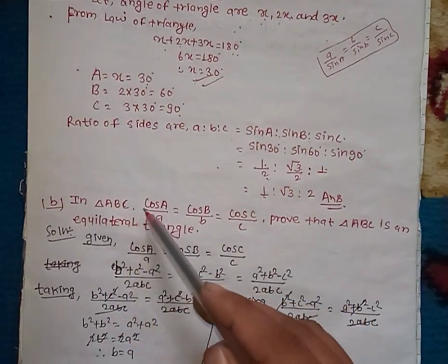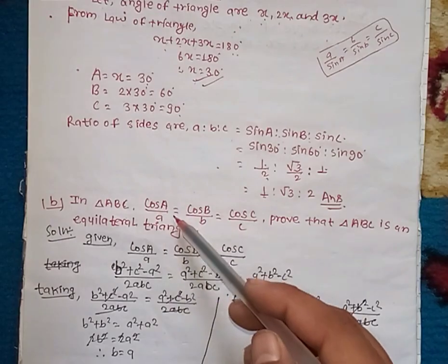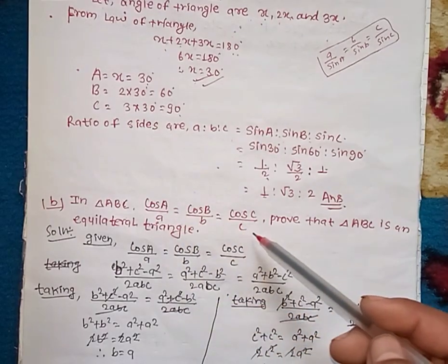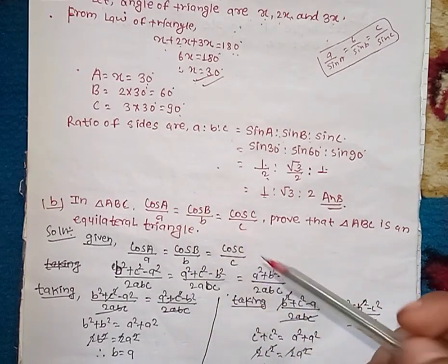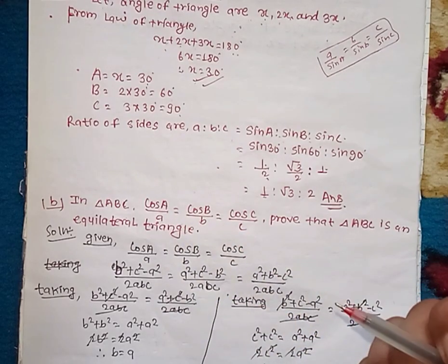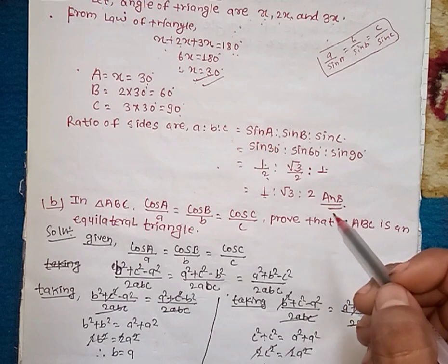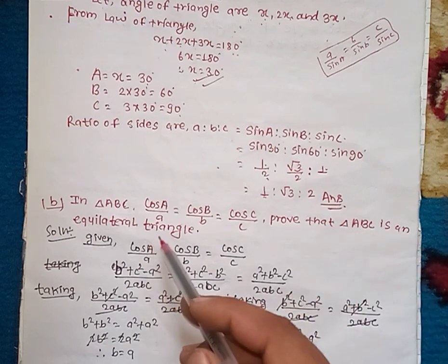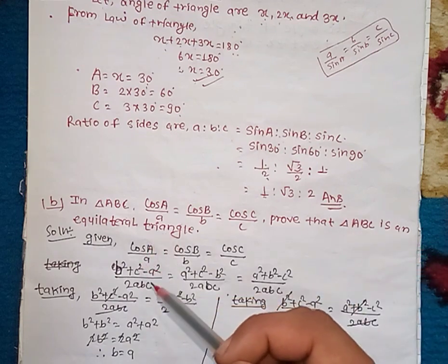This triangle is ABC. Cos A by A equals cos B by B equals cos by C. This triangle is ABC. This triangle is a true triangle.